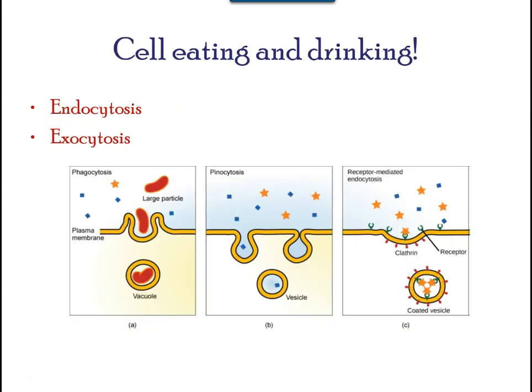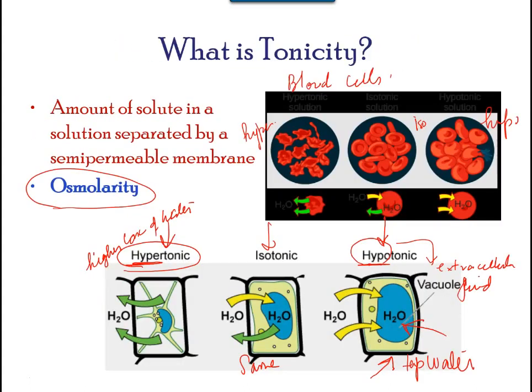The influx of water produces turgor pressure, which stiffens the walls of plant cells. Try putting a limp celery stalk in cold water and see how it becomes firm over time.